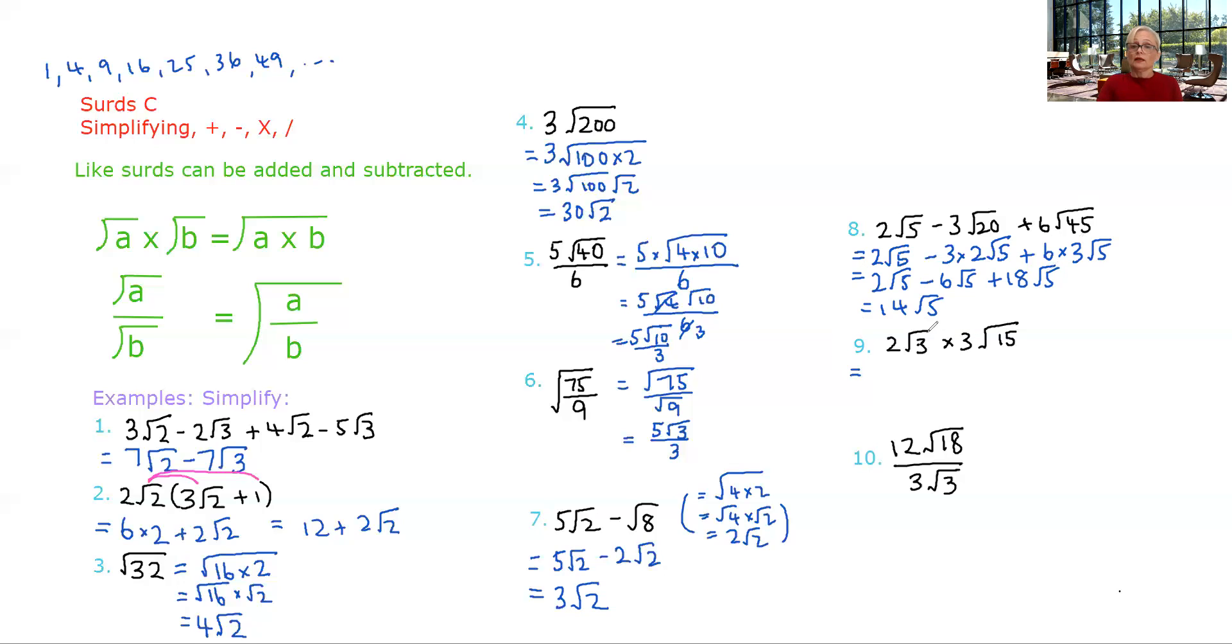Now multiplying. We're best in this situation because neither of these surds can be simplified as they are. We're best to do the multiplication first. So we did 2 times 3 is 6, and then we said root 3 by root 15 is root 45. Now we're lucky because there is a perfect square factor of 45. 45 is 9 times 5, so this will be 3 root 5. So this answer will be 18 root 5.